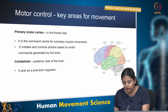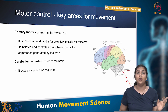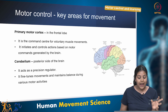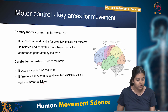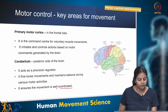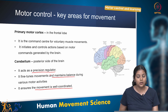The cerebellum, located in the posterior part of the brain, acts as a precision regulator. Its main function is to fine-tune movements, maintain balance and ensure that movement is well coordinated during various motor activities.